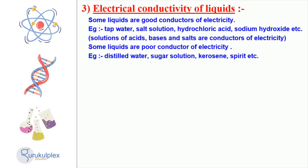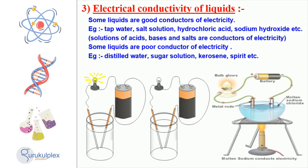Electricity has an effect on various liquids, some of which serve as excellent electrical conductors and some of which are poor conductors. Tap water, salt solutions, hydrochloric acid, and sodium hydroxide are some good conductors, while distilled water, sugar solutions, kerosene, and spirit are poor conductors.